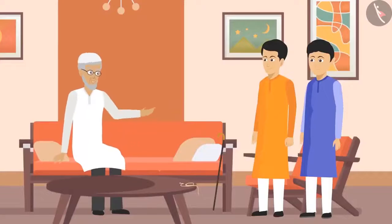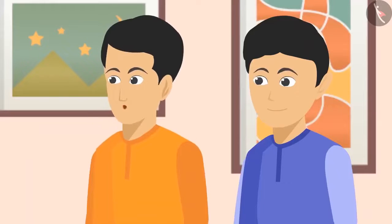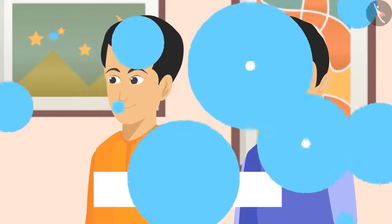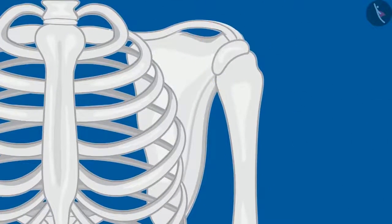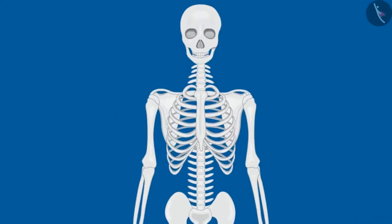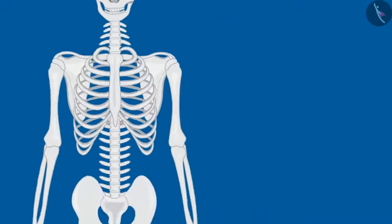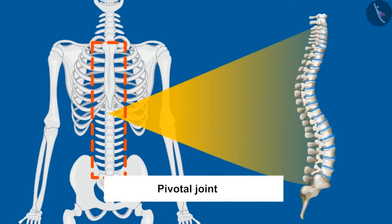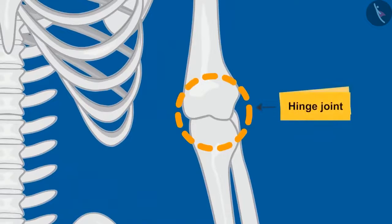Chacha asked how many types of joints are there in the body. The students explained there are many types, including ball and socket joints — through which the arm bones are attached to the shoulders and thigh bones to the hips — and pivotal joints, which keep the head attached to the spinal cord. There are also hinge joints and fixed joints.